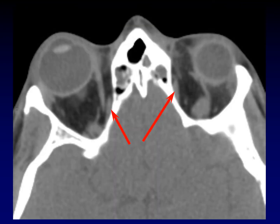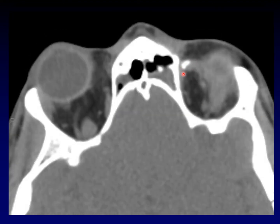Here's the superior oblique muscle running through the superior medial aspect of the orbit on either side. It comes forward and makes a turn around a little fibrous pulley, then comes over and inserts on the orbit so that it can rotate the orbit to the side. This pulley is called the trochlea, from which the trochlear nerve gets its name. The trochlea will often calcify, sometimes asymmetrically, but you have to be prepared to find it in that location and not mistake that for a fracture or other pathology.